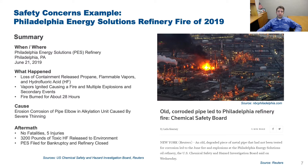One extreme recent example of corrosion's effects was the Philadelphia Energy Solutions refinery in June 2019. A corroded pipe elbow in an alkylation unit caused a loss of containment, releasing propane, flammable vapors, and hydrofluoric acid into the atmosphere. The vapors ignited, causing a fire and multiple explosions that burned for 28 hours. Thankfully no one was killed, but a large amount of toxic hydrofluoric acid was released, posing a health risk to a major metropolitan area. As a result, the refinery filed for bankruptcy and has been closed ever since.